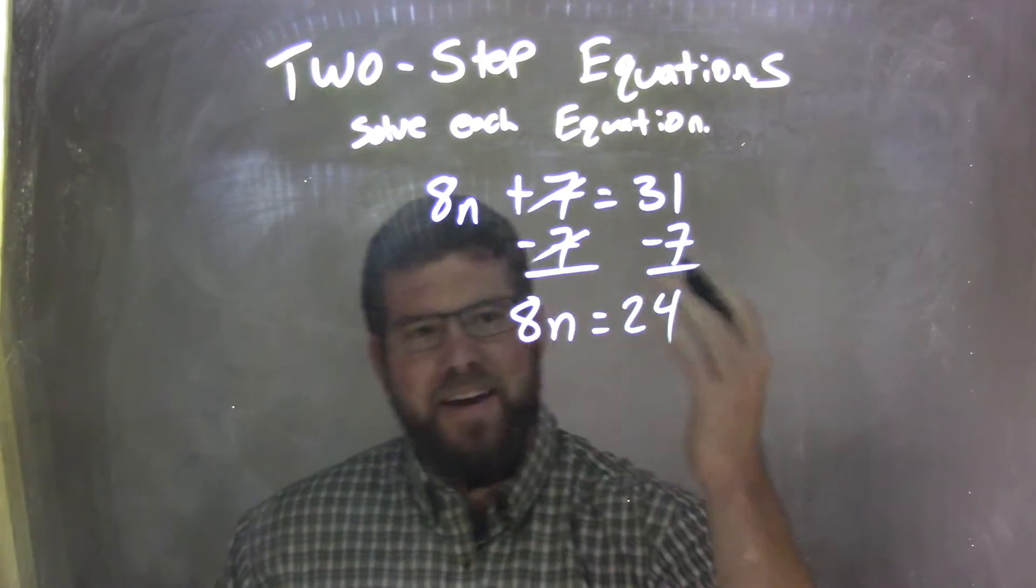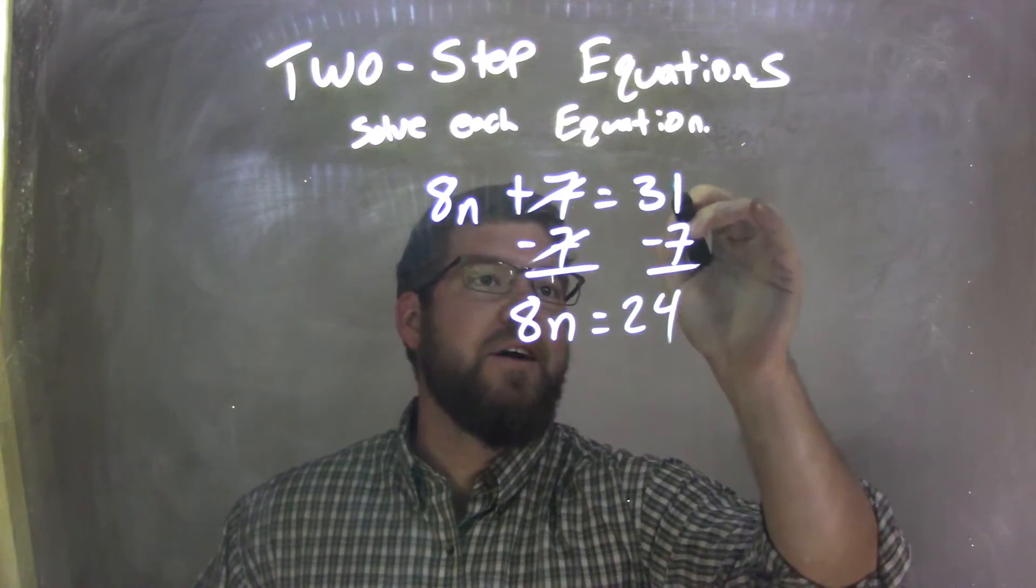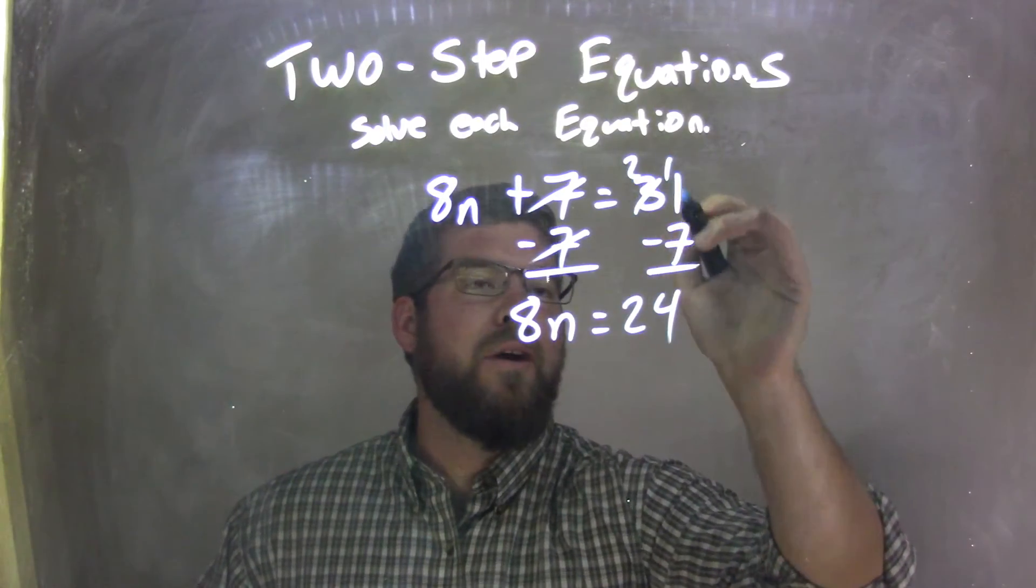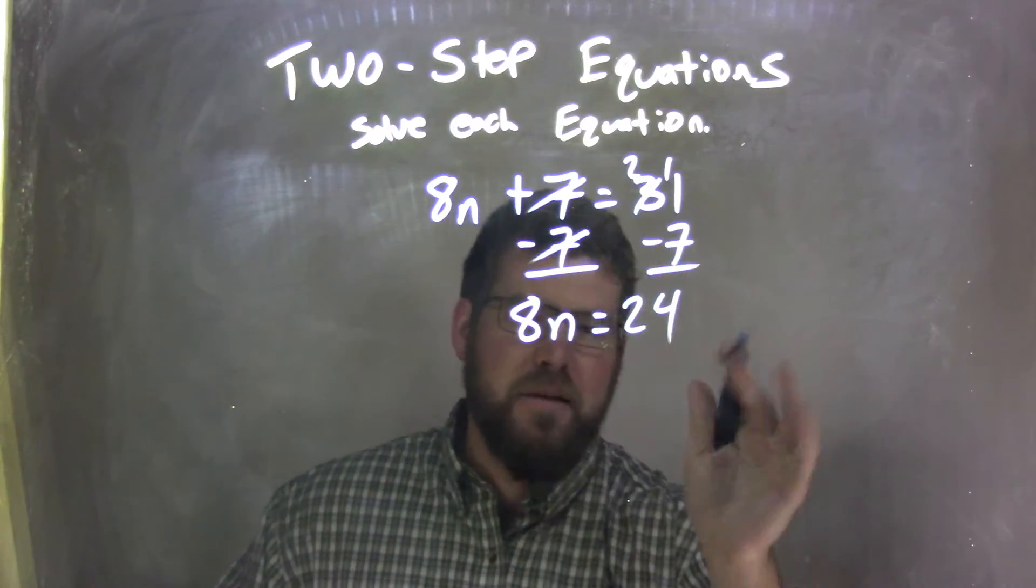Now, if you have trouble seeing that, you can always do the traditional method. Oh, make that a 2. 1, 11 minus 7 is 4. Bring down the 2.